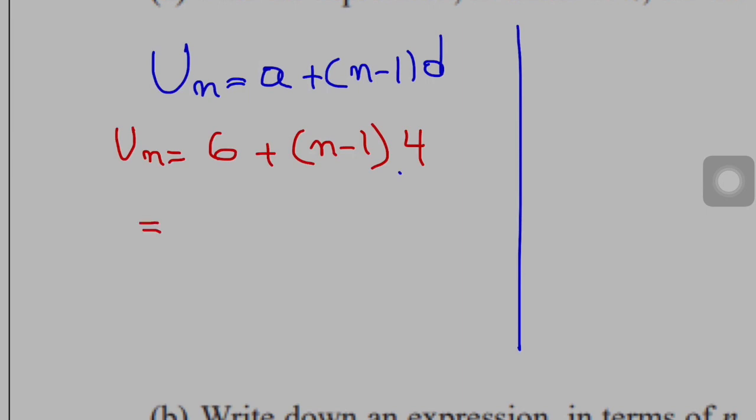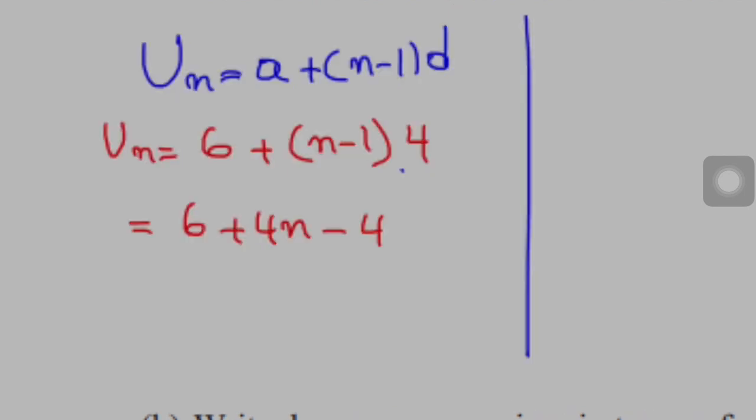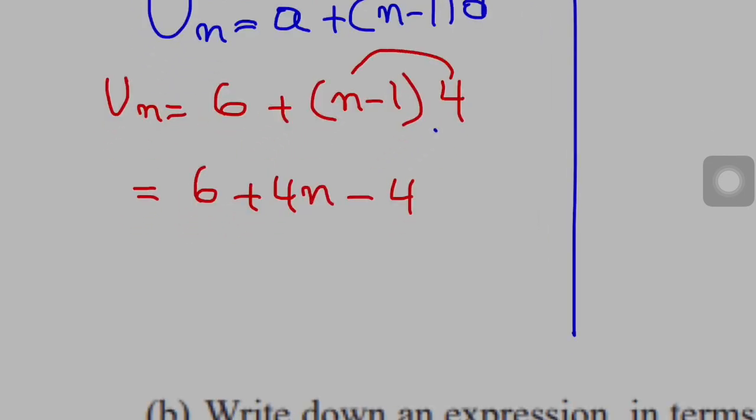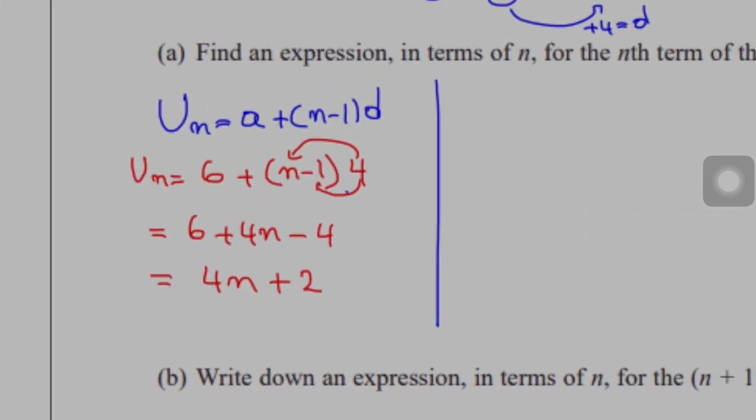So now it's 6 plus 4n minus 4, 4 times n and 4 times negative 1, and then I will simplify. So it's 4n, 6 minus 4 is positive 2. This is the first way to solve such a question, which is using the rules.